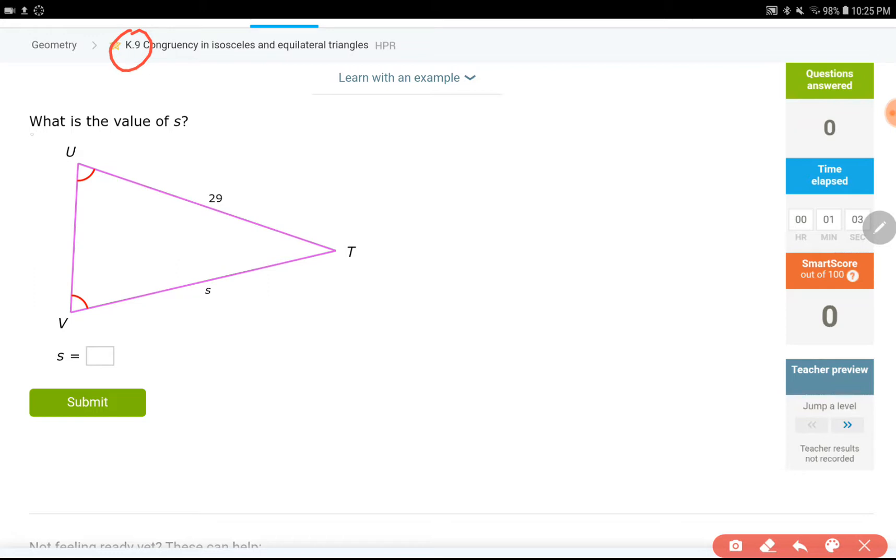The lesson to me is pretty simple, but that's usually the case. It is simple for a teacher, but not for students, not as much. So what is the value of S? We are going to have either isosceles triangles or equilateral triangles. And some sides are going to be congruent to each other or some angles.